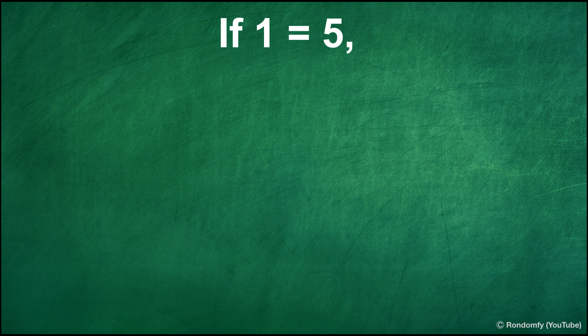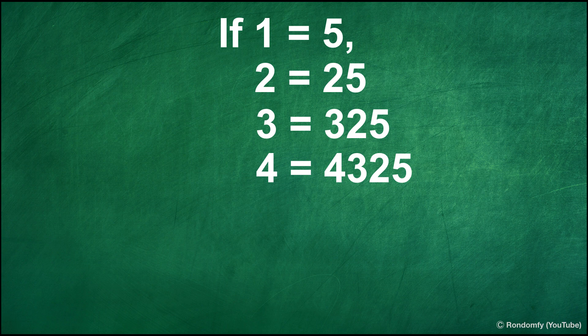If 1 equals 5, 2 equals 25, 3 equals 325 and 4 equals 4,325, what is 5 equals 2?